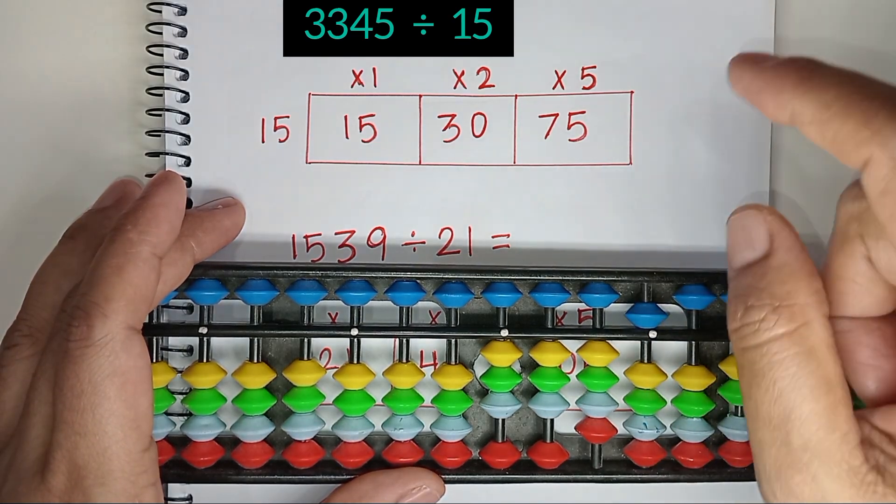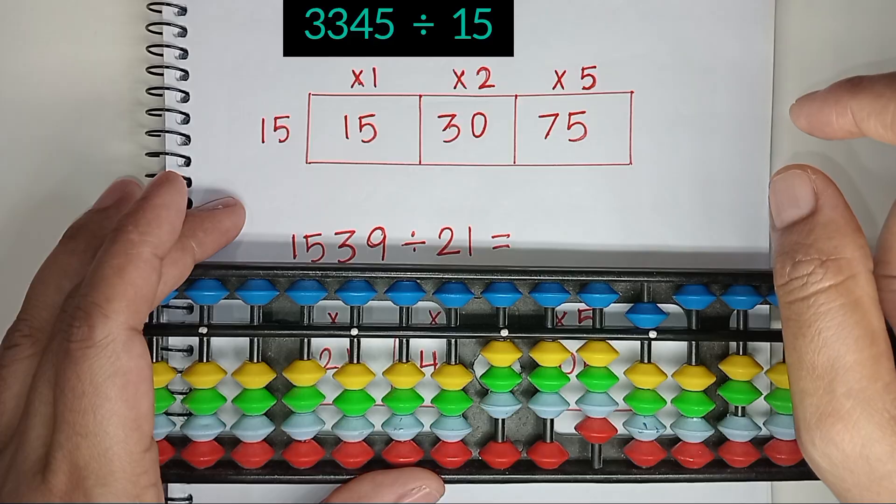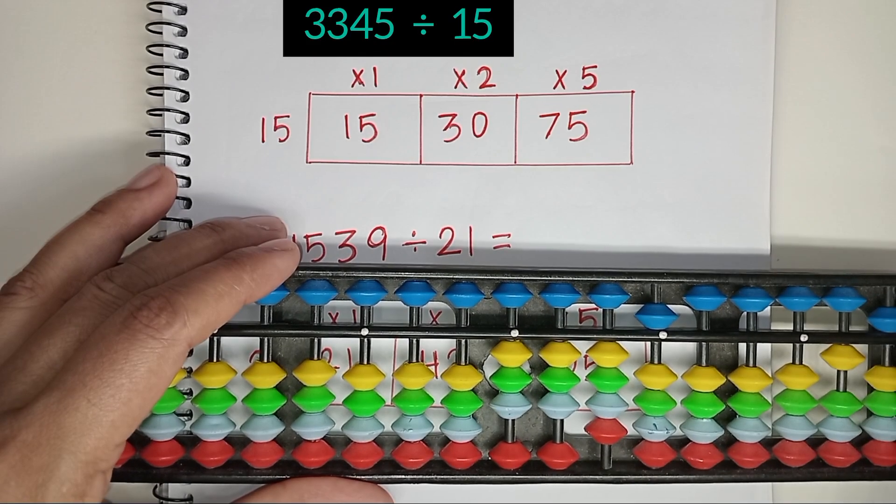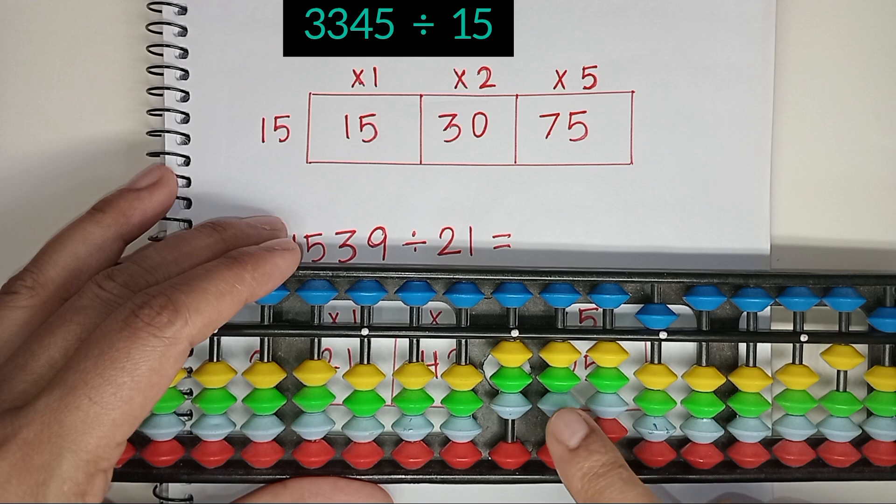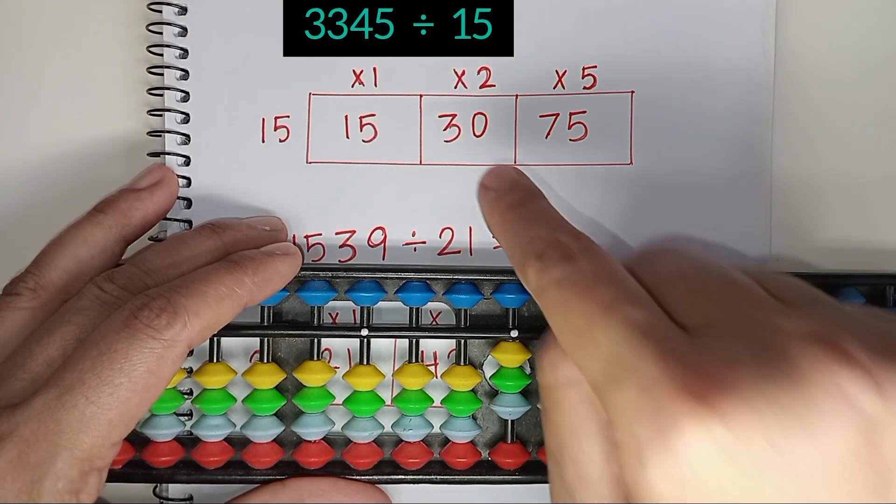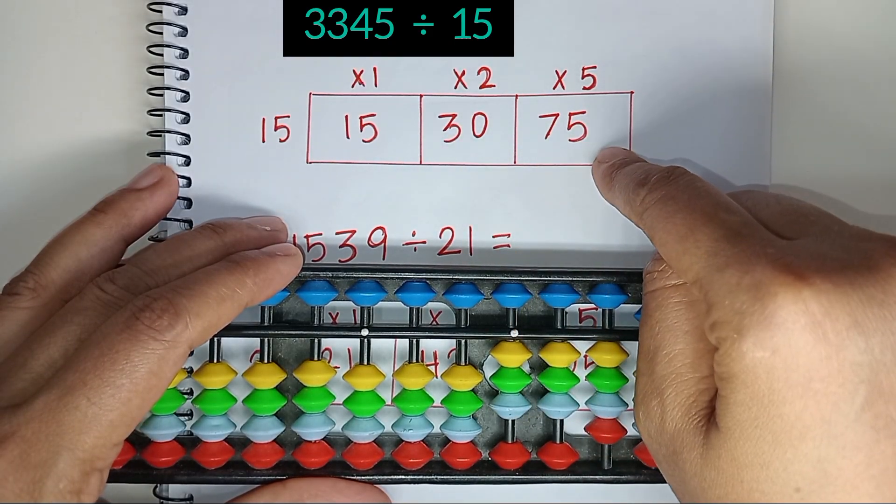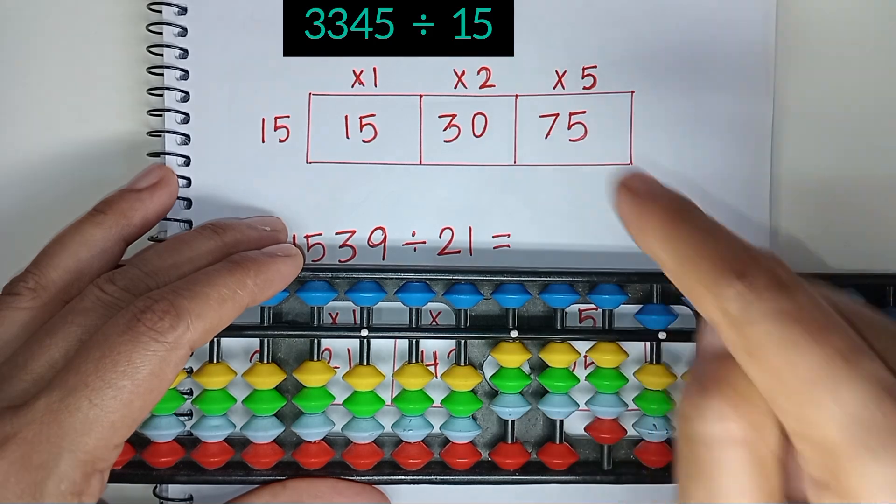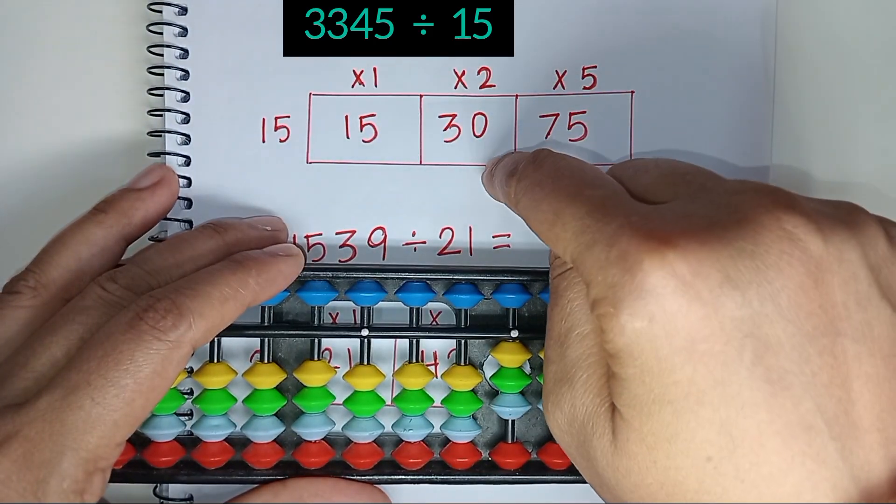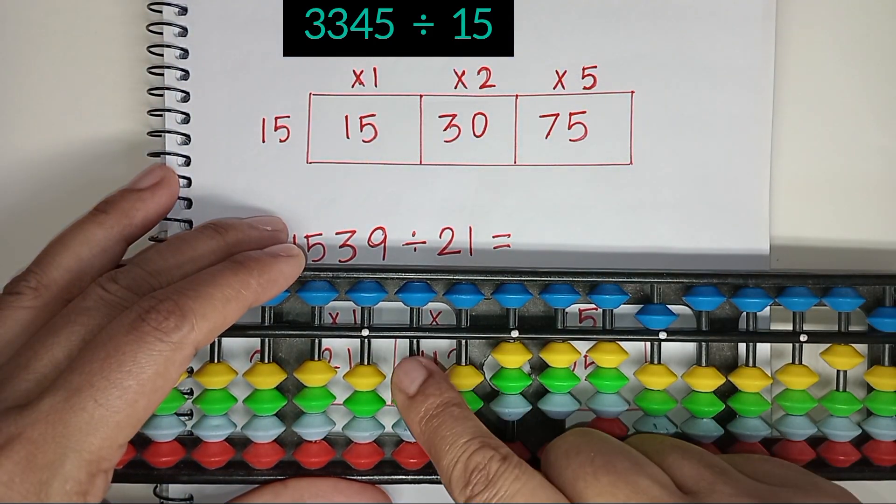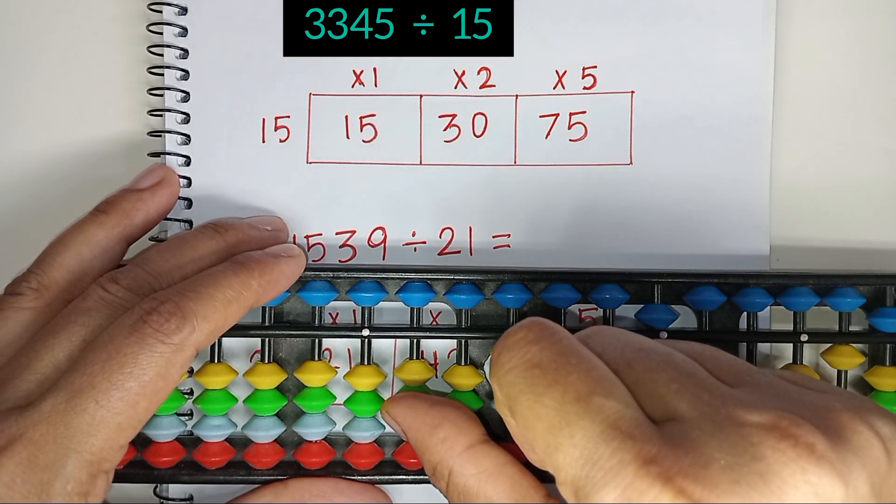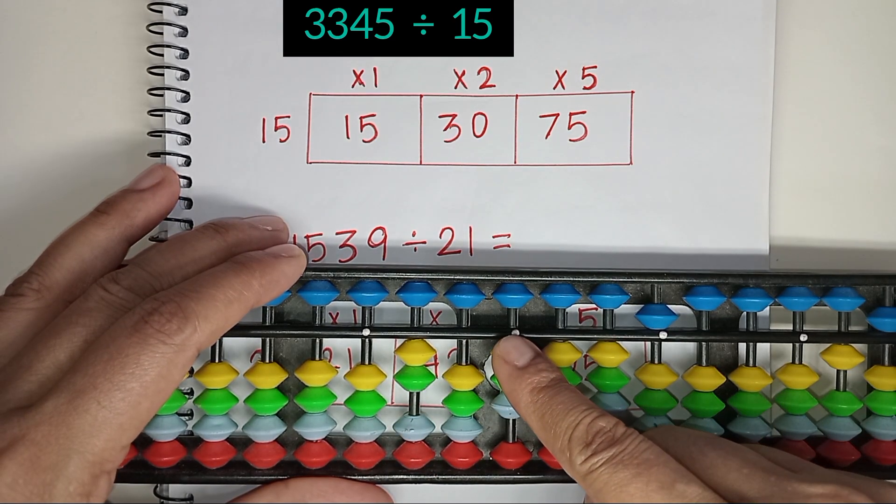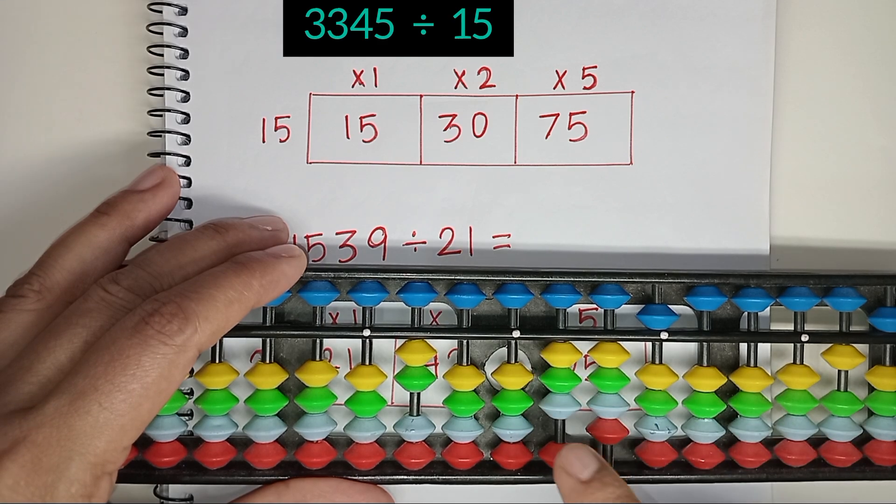As the divisor is double digit, we need to consider 2 rods. That represents 33. 33 falls between 30 and 75. We will consider the smaller one. 15 times 2 is 30. Jump 1 rod and place the answer here. As we consider 2 rods and the divisor is double digit, 15 times 2 is 30. Less 30 from here. We stopped here.